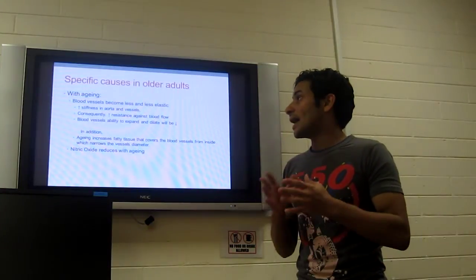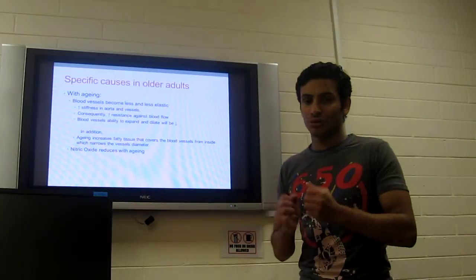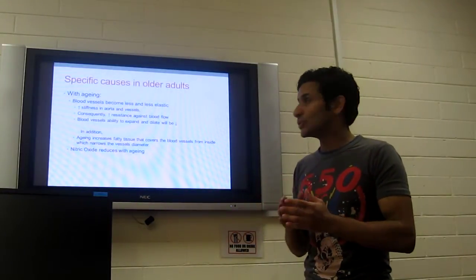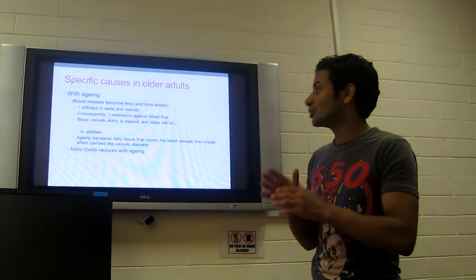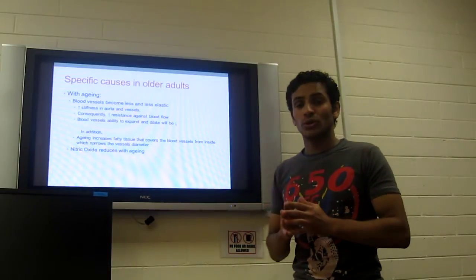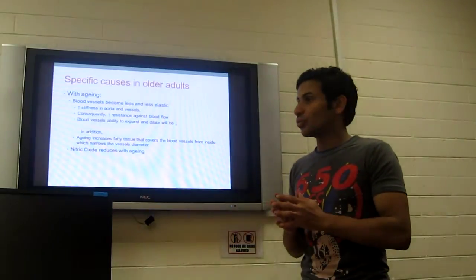The blood's ability to expand and dilate will be reduced. In addition, aging increases fat tissues that cover the blood vessels from inside, which narrows the vessels' diameter. And also, nitric oxide reduces with aging, which increases stiffness.